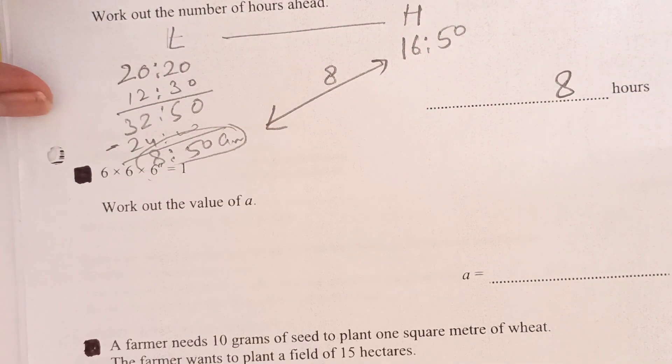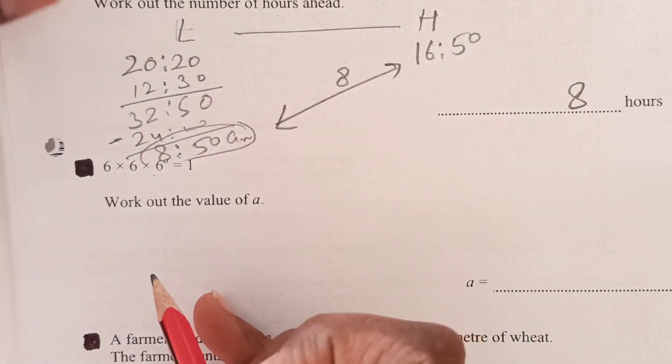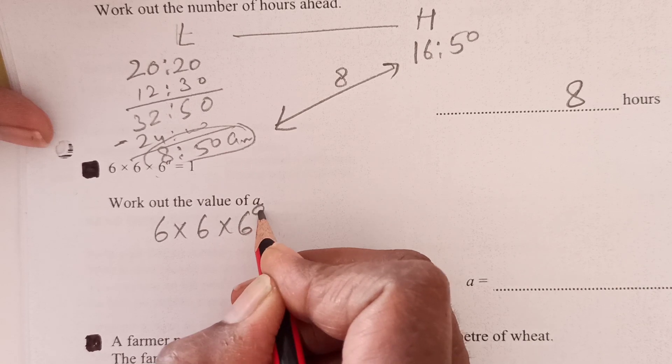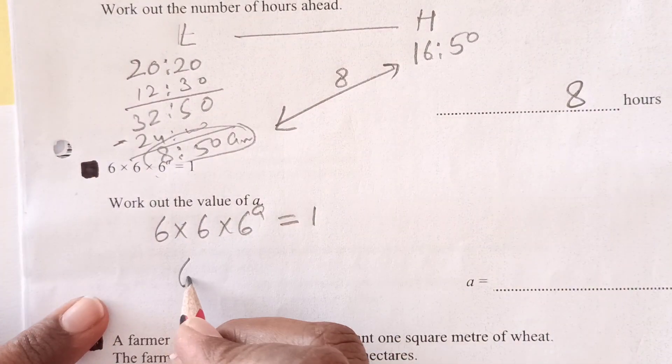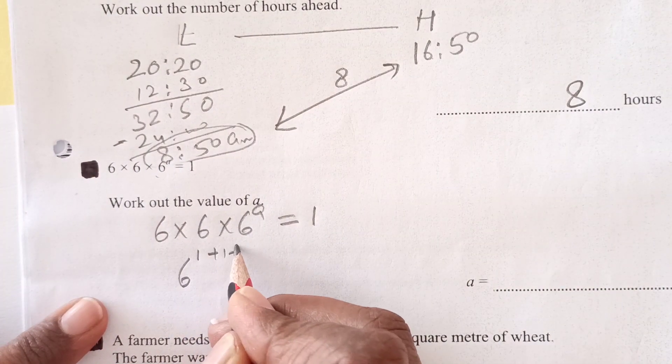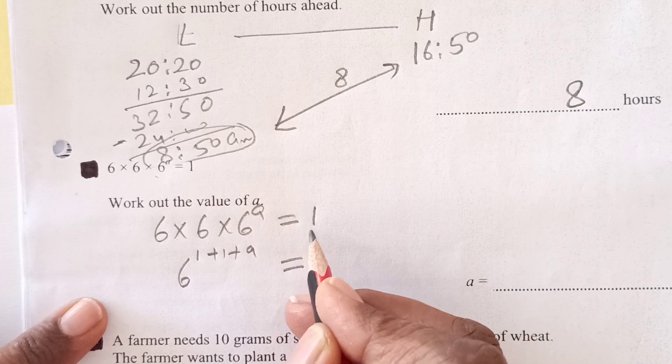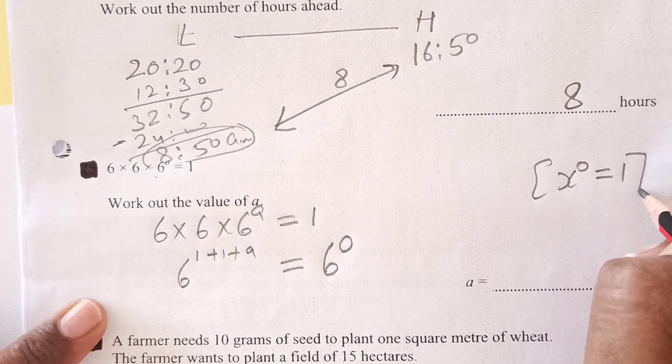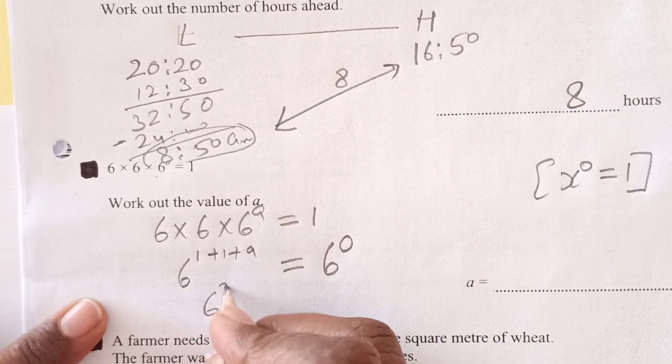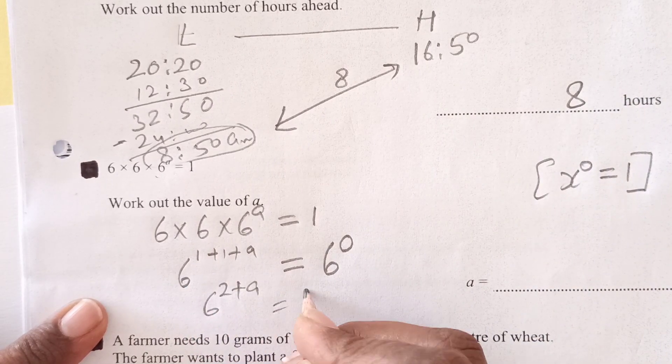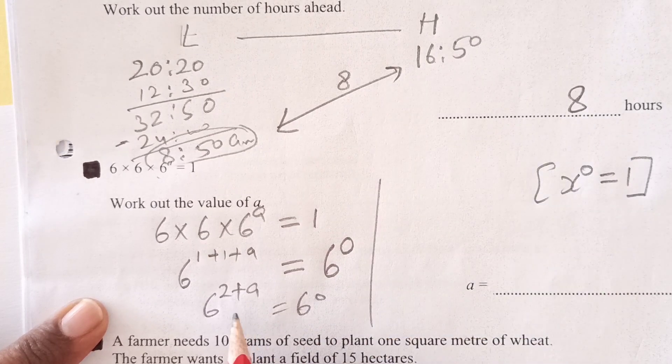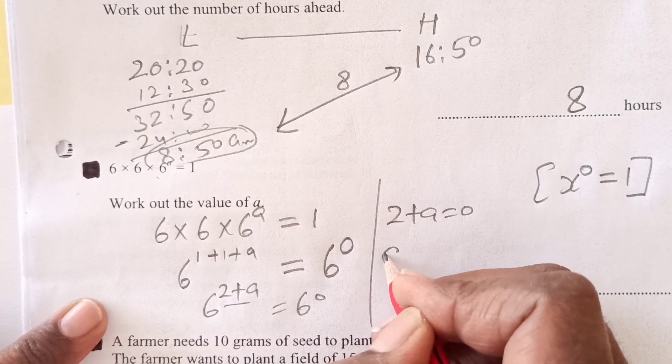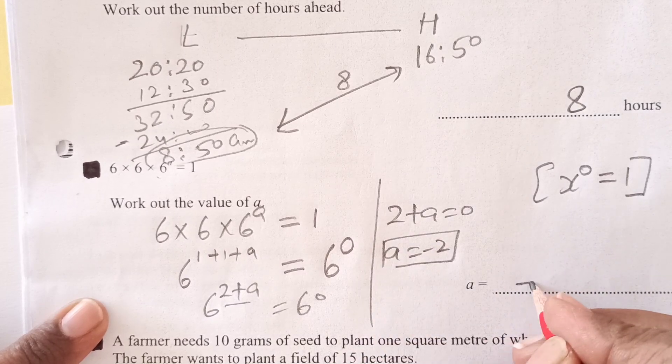Now here we have 6 times 6 times 6 power a equals 1. Let me rewrite. So this is going to be 6 power 1 plus 1 plus a equals 1, which can be written as 6 power 0 because anything raised to power 0 is 1. So 6 power 2 plus a equals 6 power 0. So equating that, we have 2 plus a equals 0, a equals minus 2.